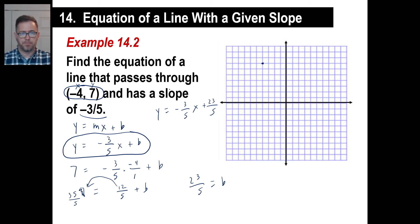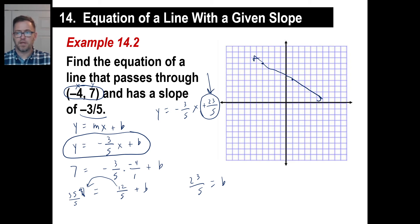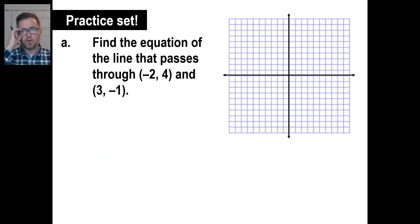Let's test it. If the slope is negative three fifths, that means we go down three and over five. There's my other point. If you connect the dots like this, your y-intercept is a little more than four. What's 23 divided by 5? That's four and three fifths — which is exactly what that point is if drawn correctly. There you go. Go ahead and pause it and try problem A.